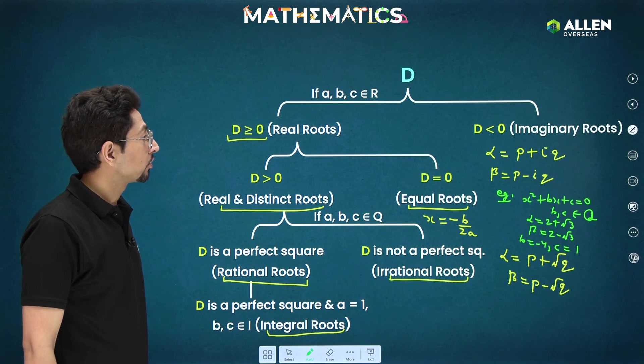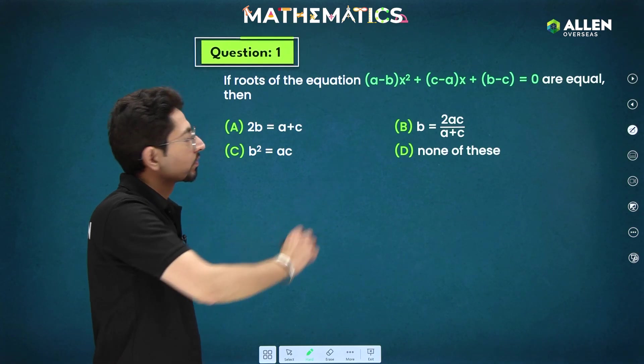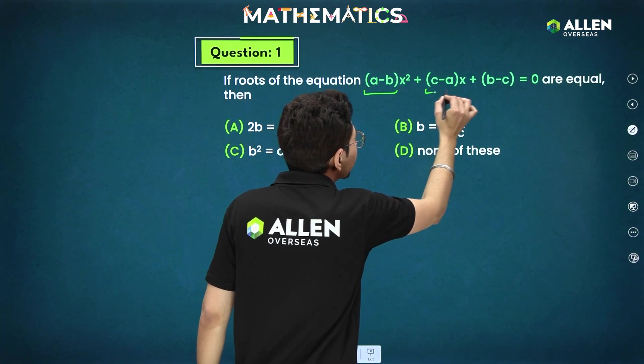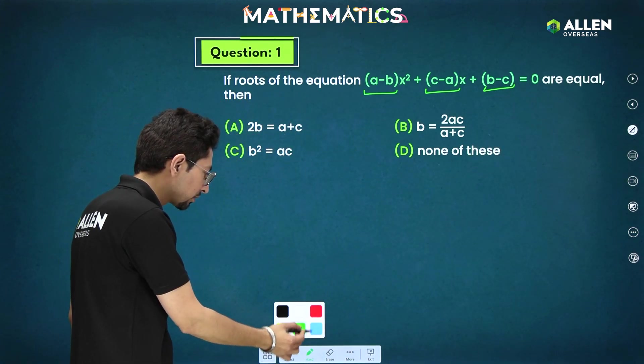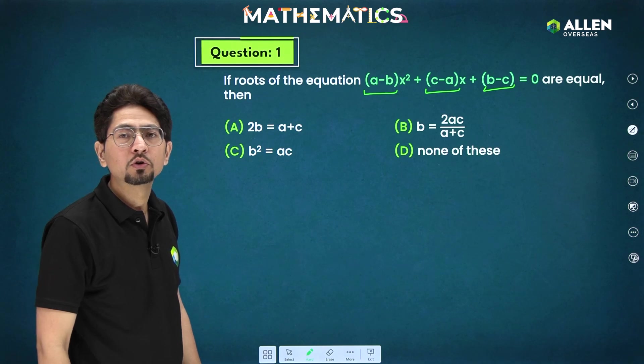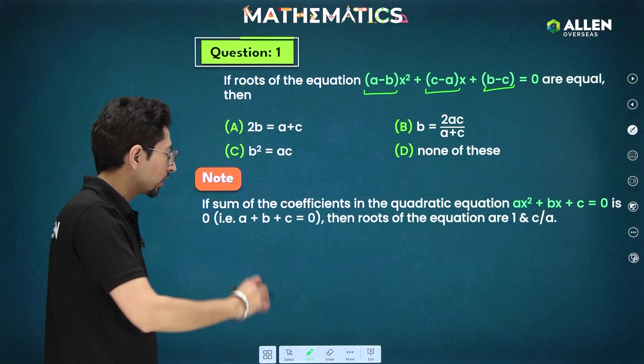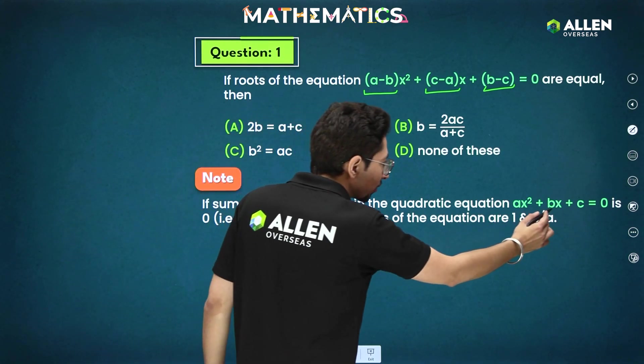Moving on to first question, let's see. If roots of the equation are equal. Now, here very interesting question. If you observe clearly, sum of all these terms is 0. Sum of coefficients of the quadratic is coming out to be 0. So, very special condition here, you have to note down. If sum of coefficients in the quadratic is 0, then roots will be 1 and c/a.